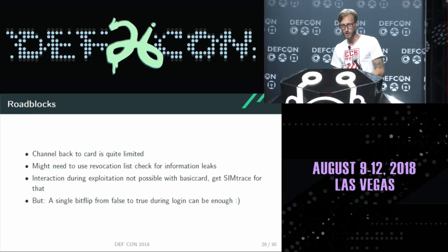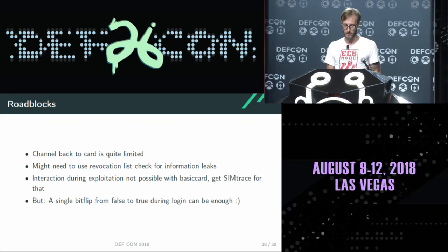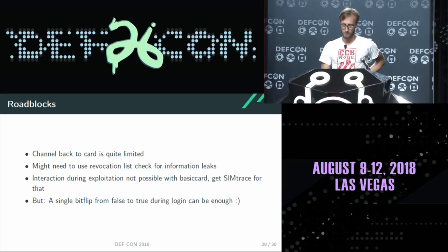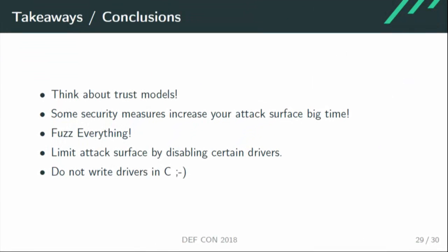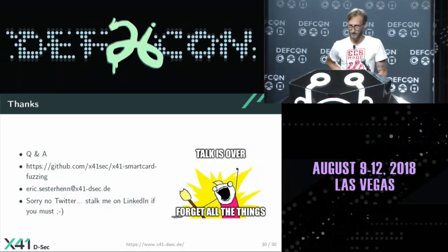There are some roadblocks to exploitation because you have no interaction — if you have a pre-programmed smart card, the channel back to the smart card is quite limited, so abusing information leaks is an issue. But in the end, if you can control a bit of memory, that might be enough in a login case. As a takeaway: think about your trust models. Smart cards are intended to make you more secure, but you also usually increase your attack surface. Thanks everybody for listening.